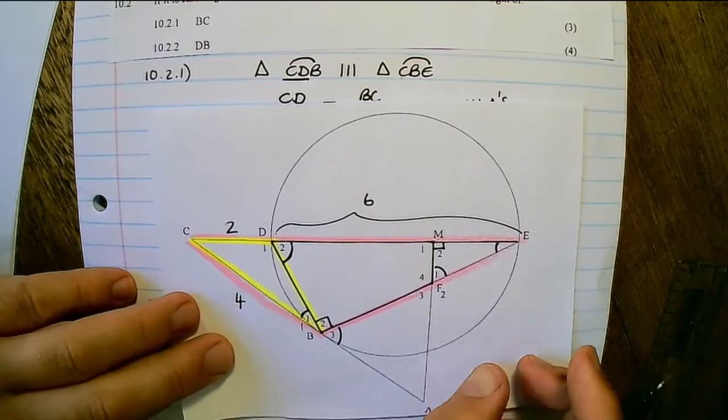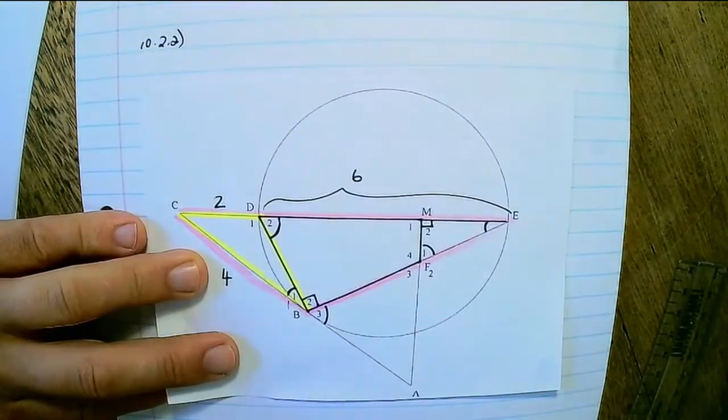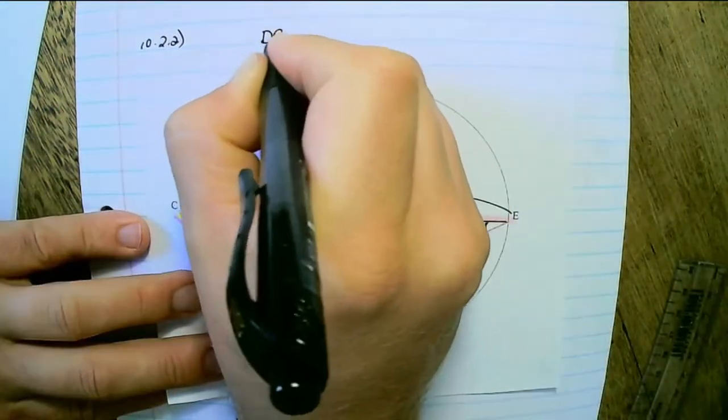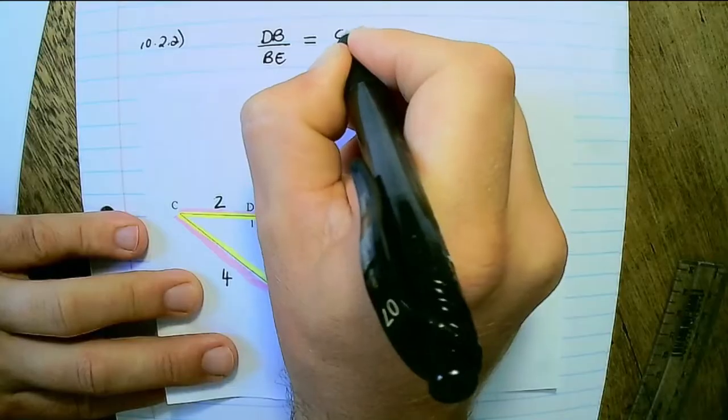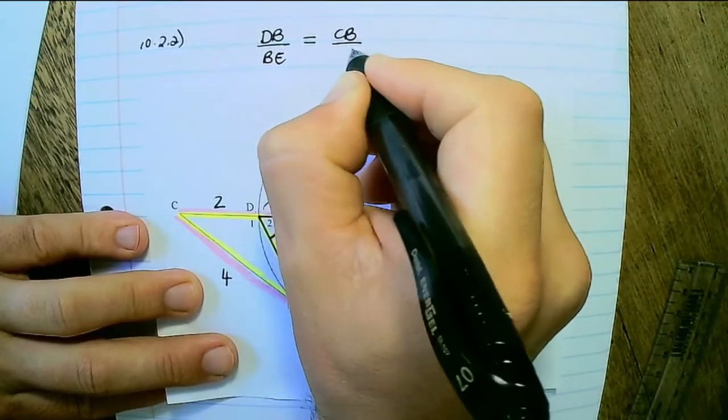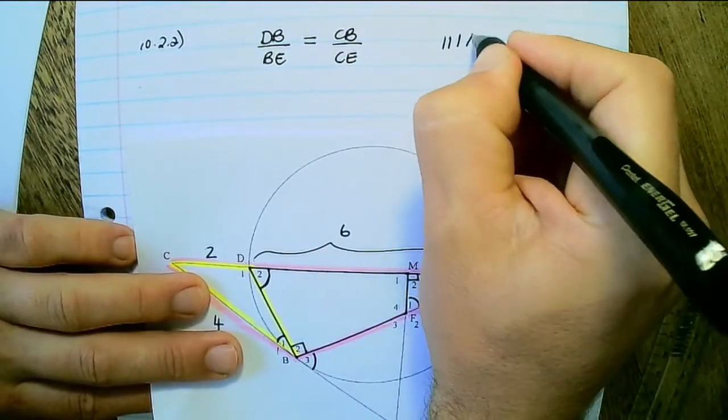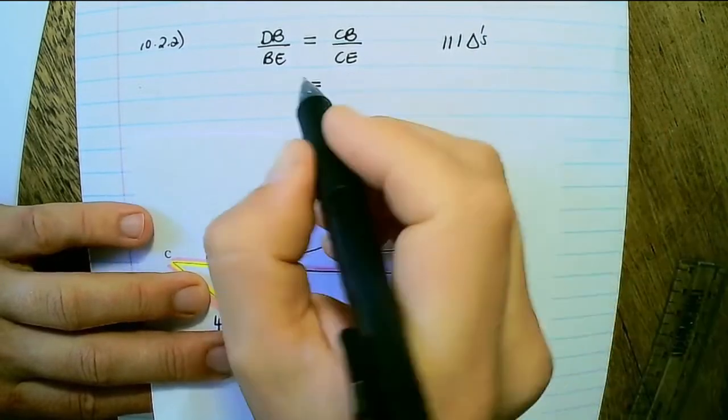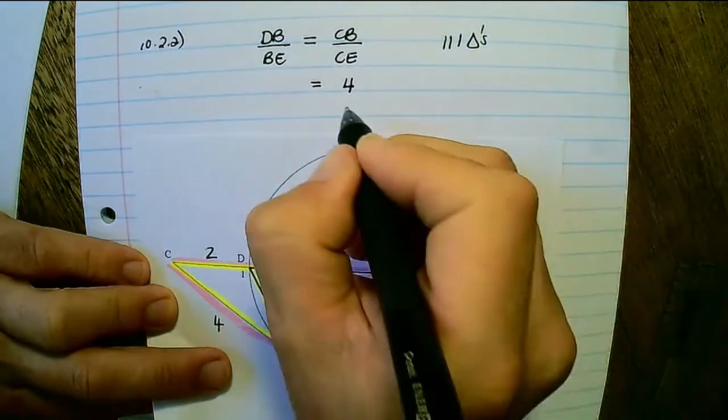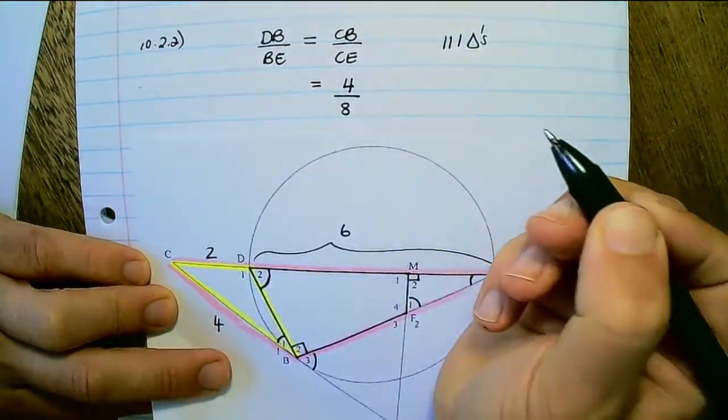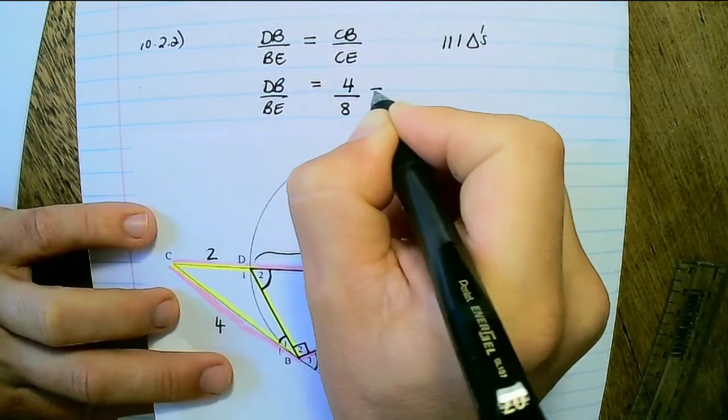And lastly, we want to find the length of DB. So from the similarity, we have DB over BE is equal to BC over CE. So from the similar triangles. Now we already know that BC is equal to 4 and CE is equal to 8. Therefore, DB over BE is equal to a half.